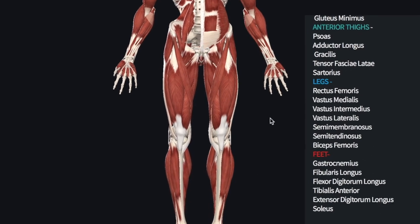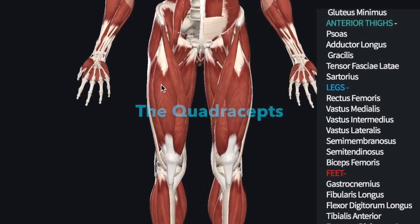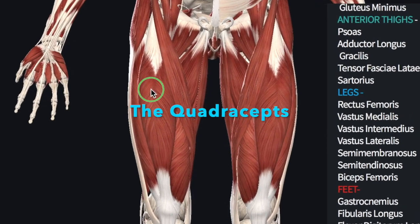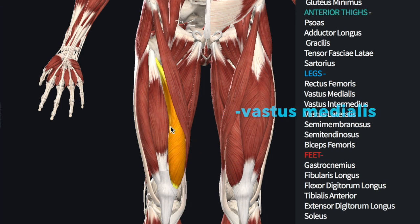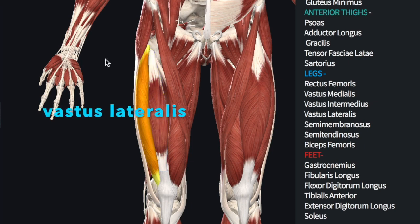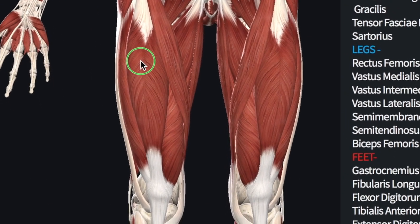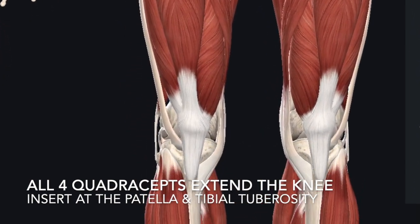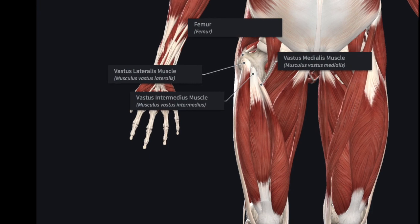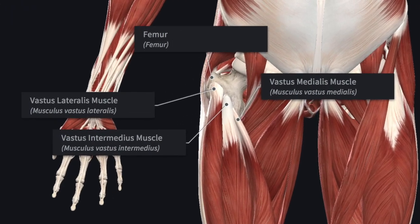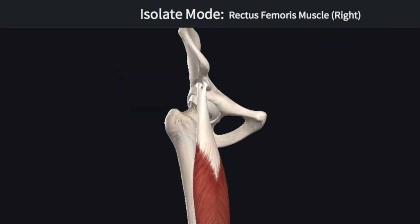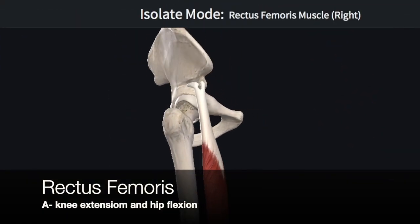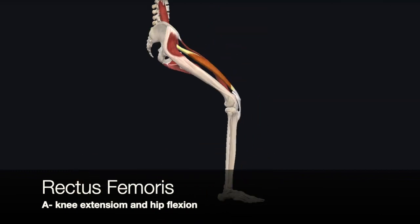We'll now explore the muscles on the upper leg that act on the lower leg, beginning with the quadriceps. From superficial to deep and medial to lateral: the rectus femoris, vastus medialis, vastus intermedius, and vastus lateralis. All four quadriceps work together to extend the knee and share a similar insertion at the patella and tibial tuberosity. The rectus femoris originates at the anterior iliac spine and the margin of the acetabulum, and is involved in extension of the knee as well as hip flexion.